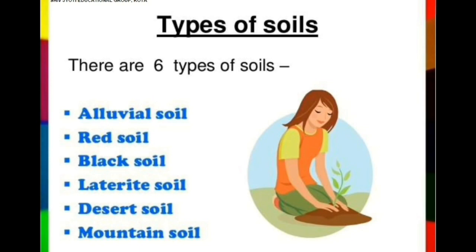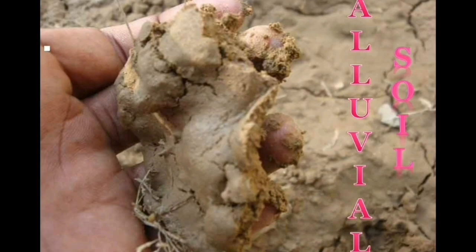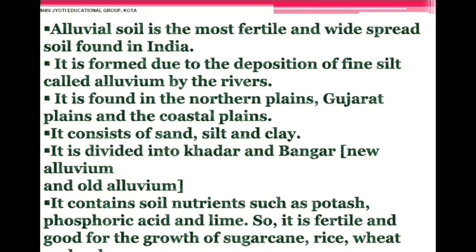There are six types of soils: alluvial soil, red soil, black soil, laterite soil, desert soil, and mountain soil. Alluvial soil is the most fertile and widespread soil in India. It is formed by the deposition of fine silt called alluvium by rivers, and is found in the northern plains, Gujarat plains, and coastal plains. It consists of sand, silt, and clay, and is divided into khadar (new alluvium) and bhangar (old alluvium). It contains potash, phosphoric acid, and lime, making it good for sugarcane, rice, wheat, and pulses.